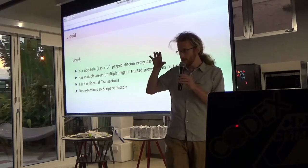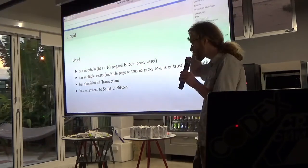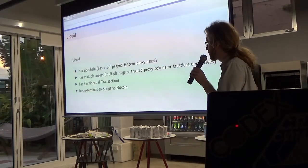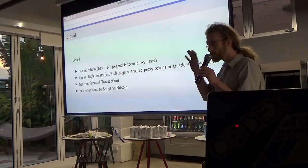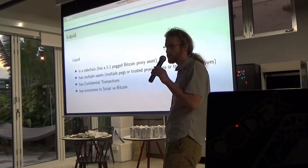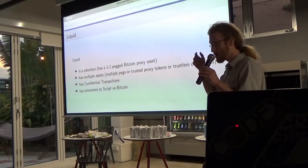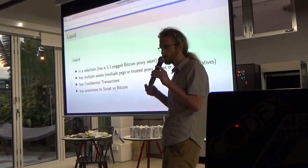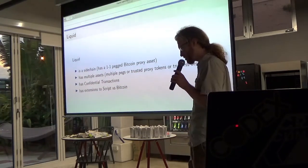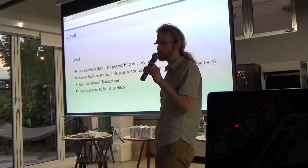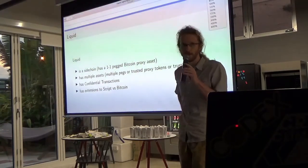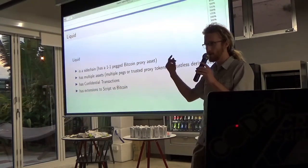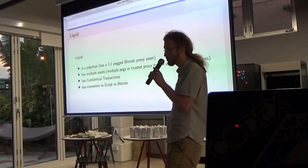Liquid is a sidechain. Sidechain means you've got a separate blockchain — you can move Bitcoin onto it and off of it. We'll probably hear more about sidechains when we talk about RSK later on. But liquid for sidechain purposes is not that exciting. It's a federated sidechain, meaning the peg is maintained by a federation of signers. When you move coins onto the system, you're moving into custody of this 11-of-15 consortium — an 11-of-15 checkmultisig script on Bitcoin.